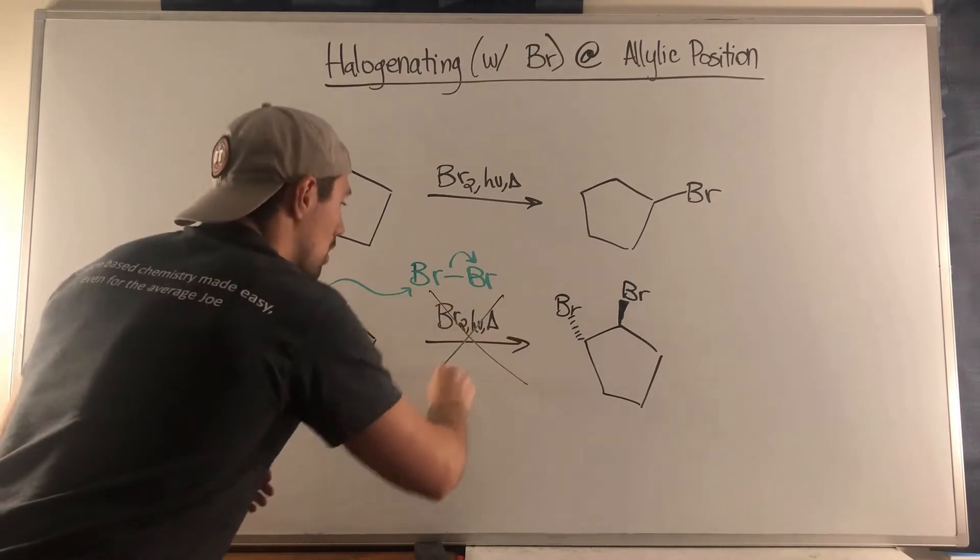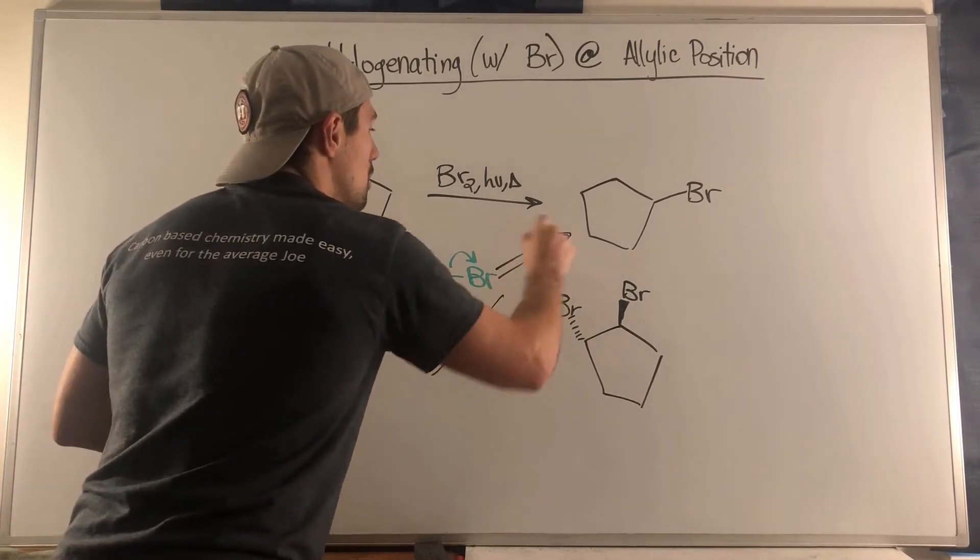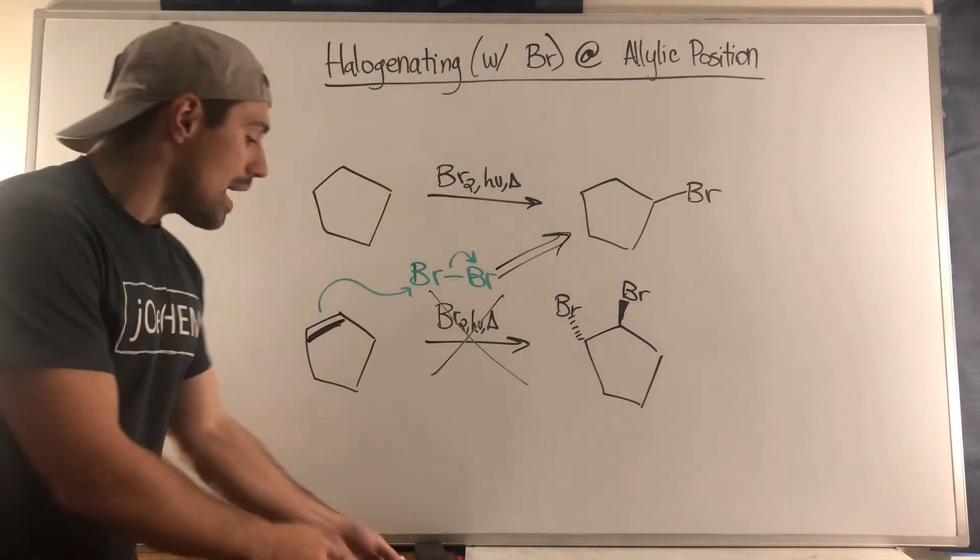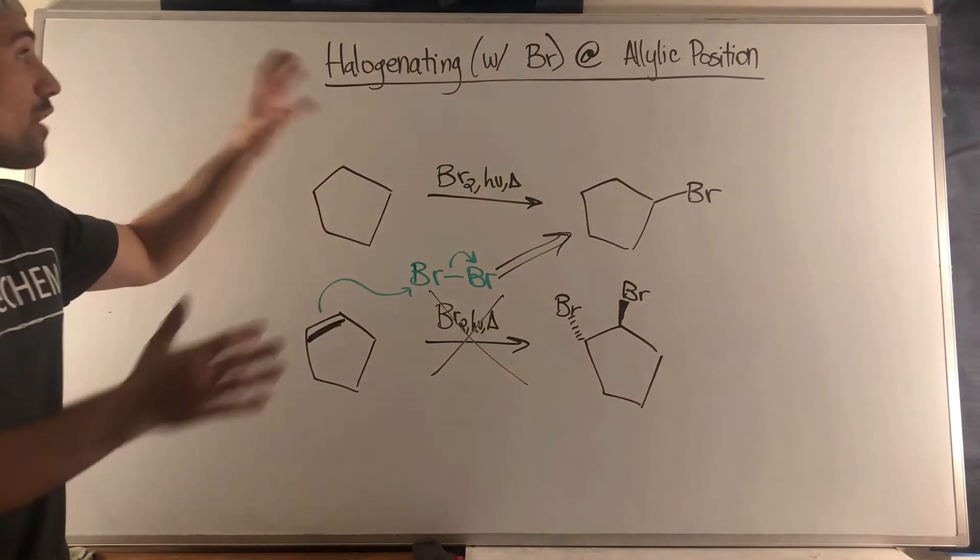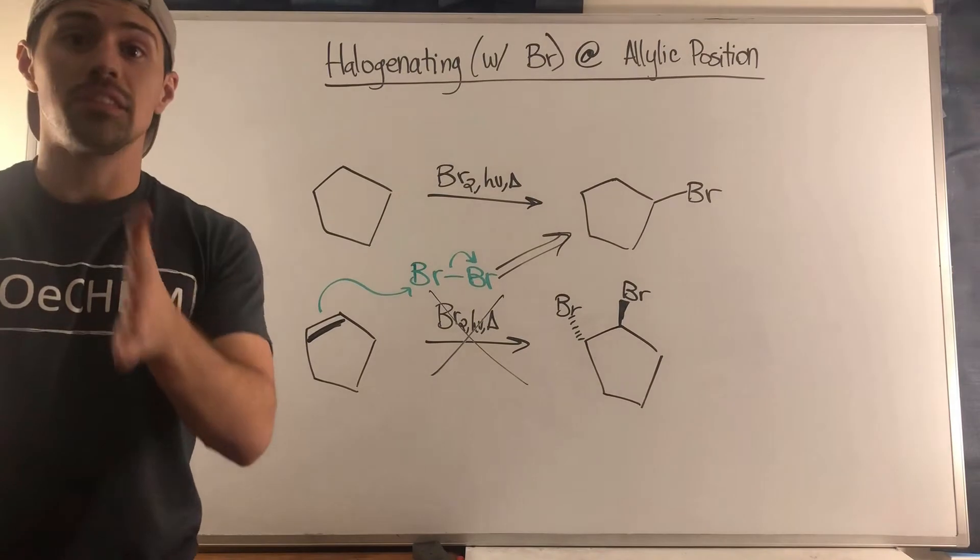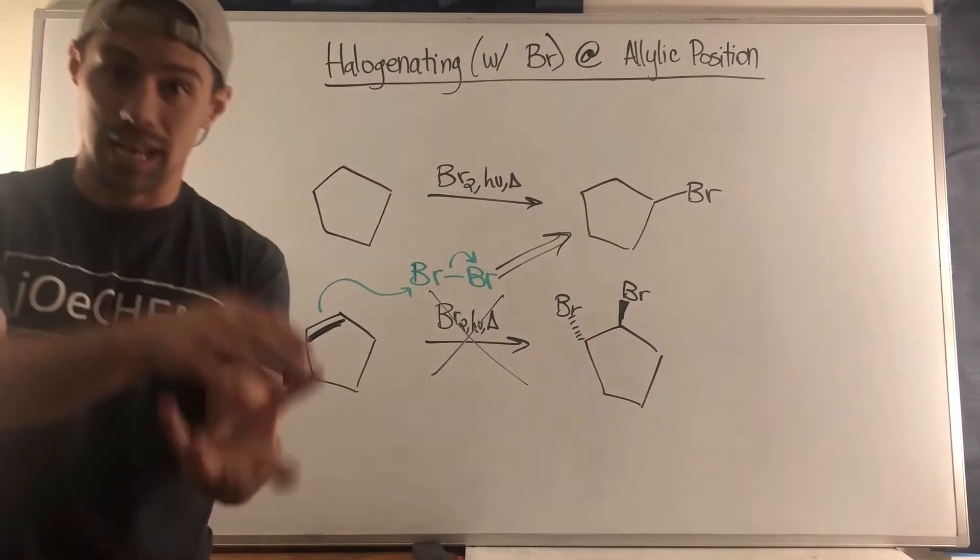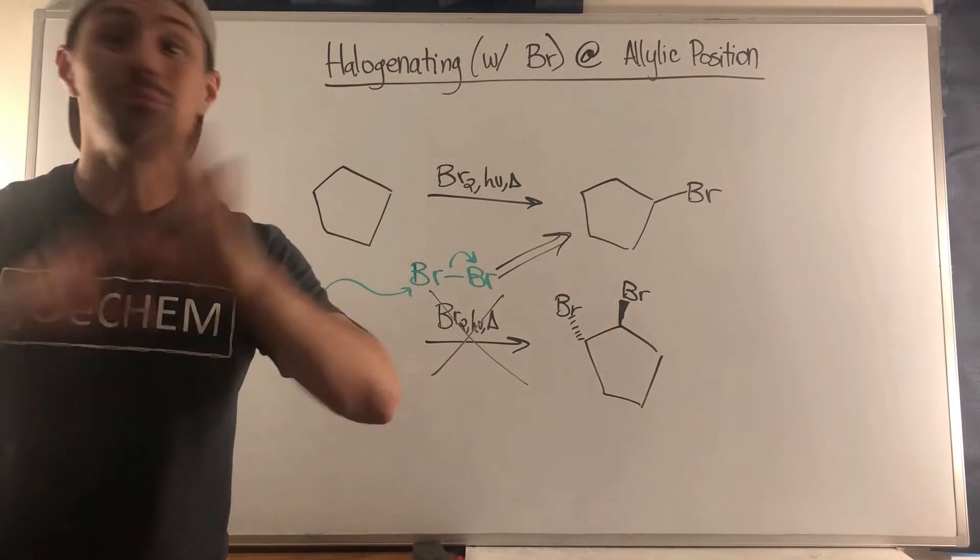What I'm trying to say is this doesn't work the way we expected it to up top. So how can we in the world functionalize allylic carbons in such a way by halogenating them? How do we do that?